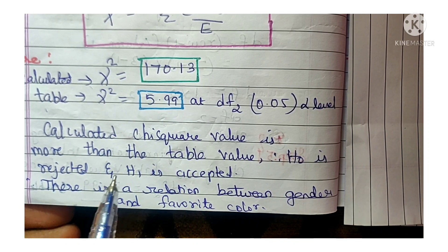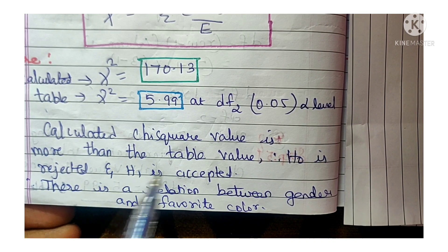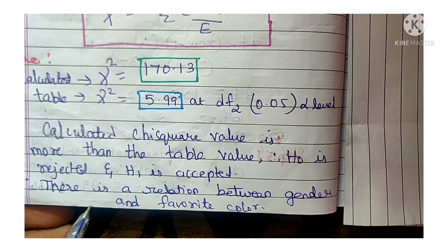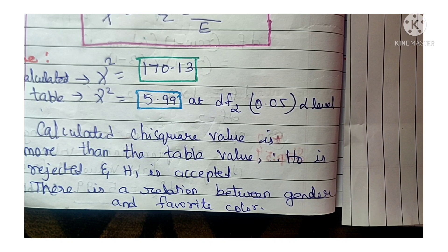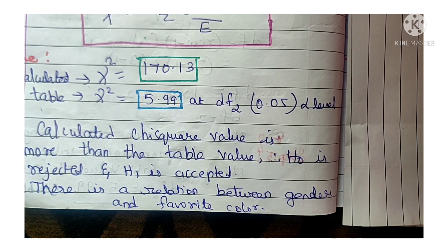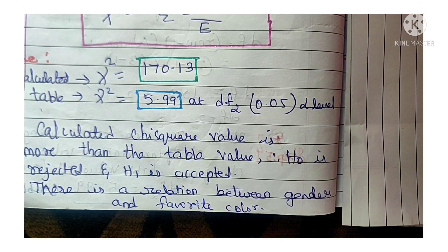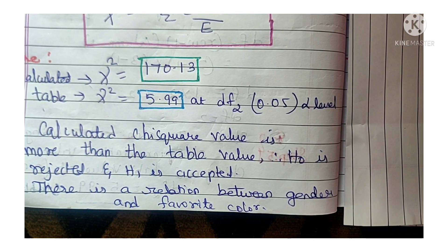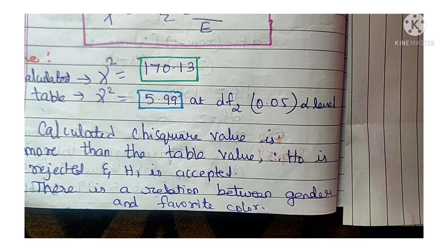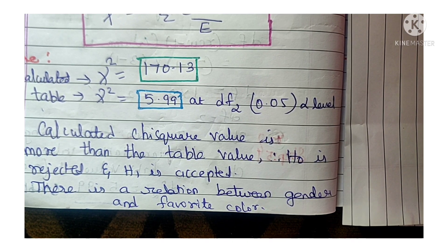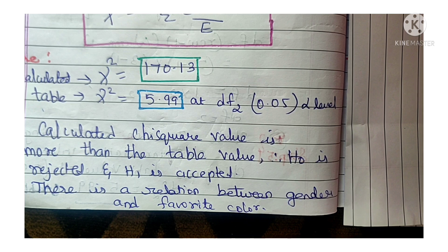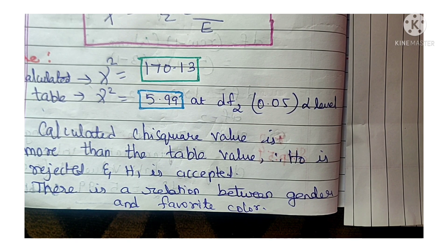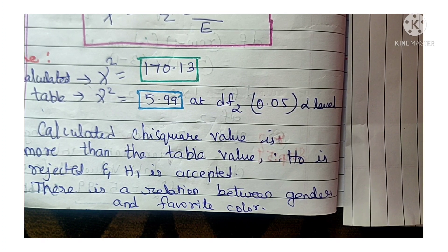In conclusion, since the calculated chi-square value (170.13) is greater than the table chi-square value (5.99), we reject the null hypothesis and accept the alternate hypothesis: there is a relationship between gender and favorite color. Apply this same approach for other chi-square test calculations. Hope this video is clear. Feel free to post doubts in the comments. Keep supporting Science Easy Tech channel.